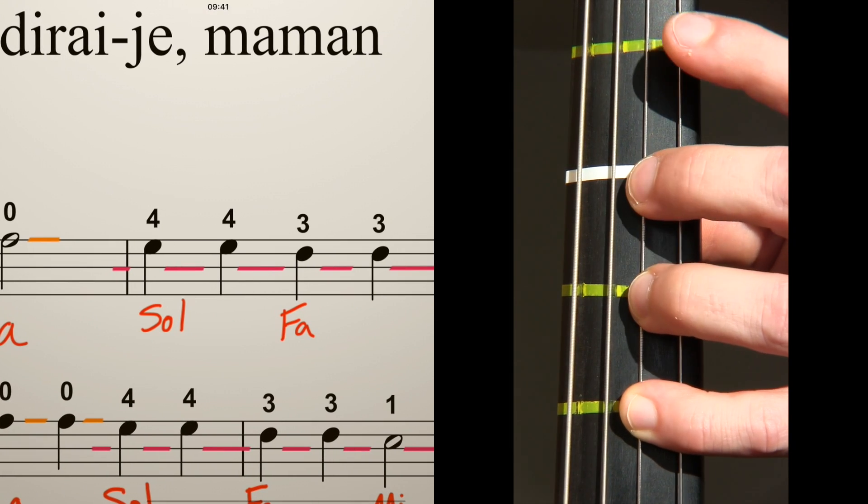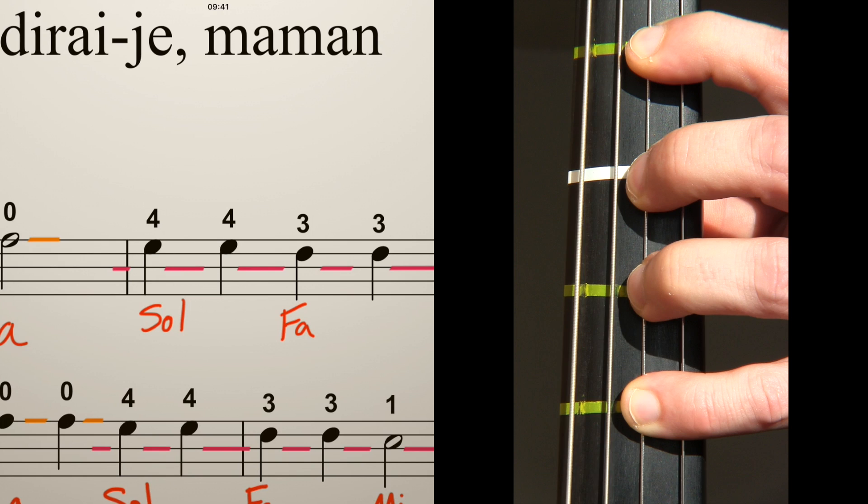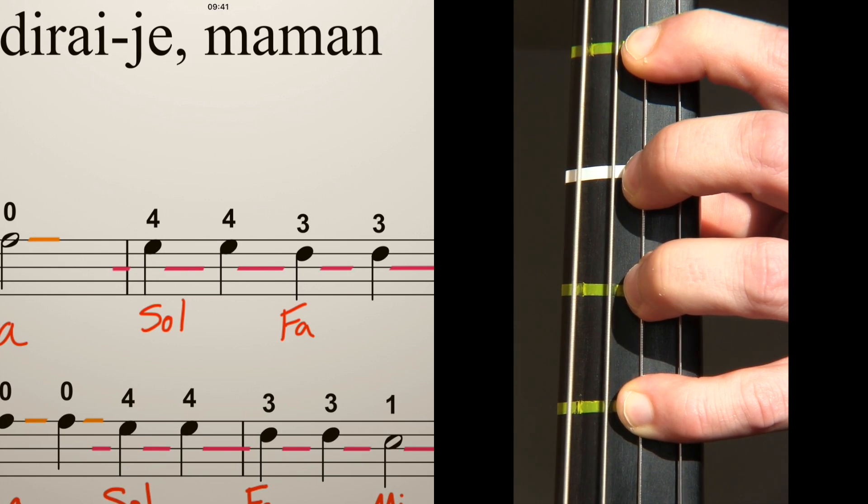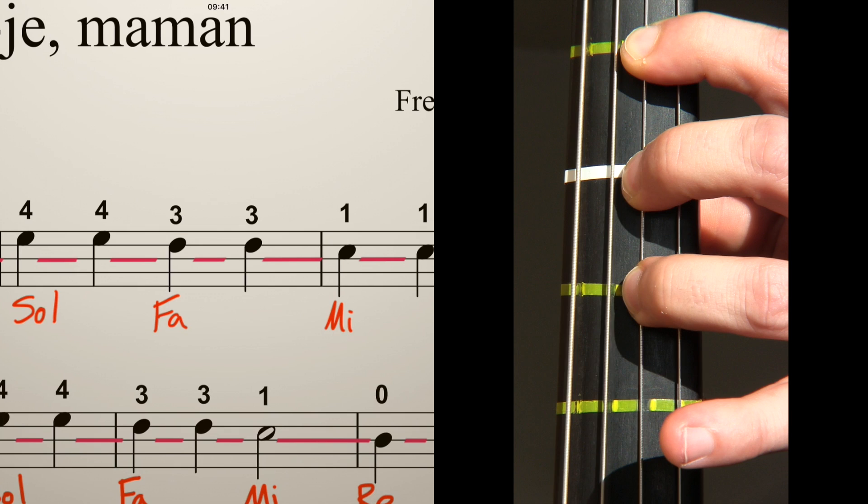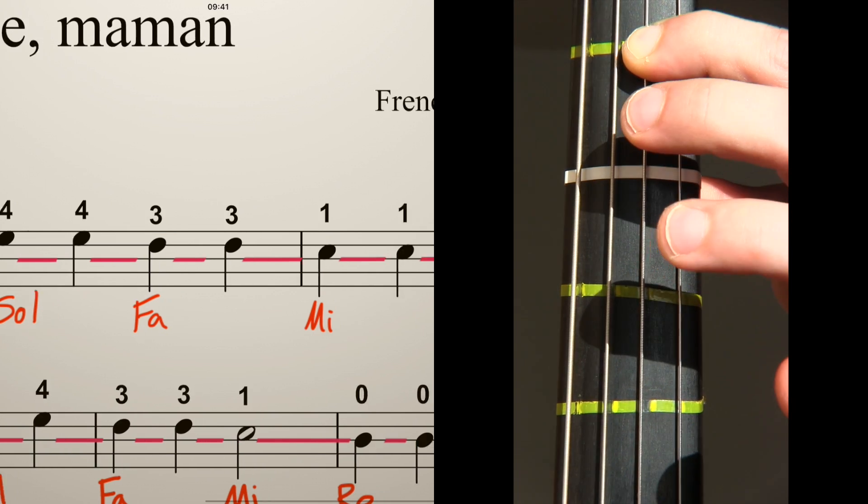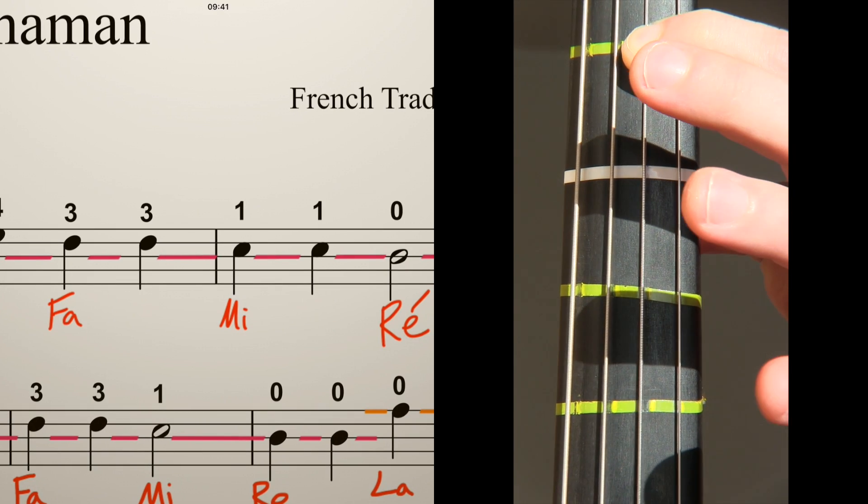All four fingers down for the G. Lift the fourth. Lift to the first. And zero.